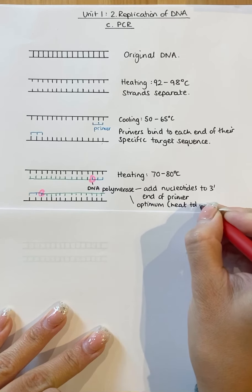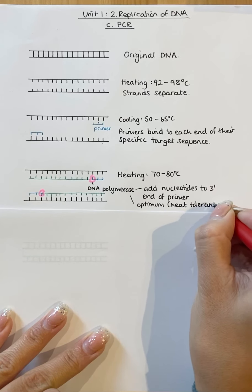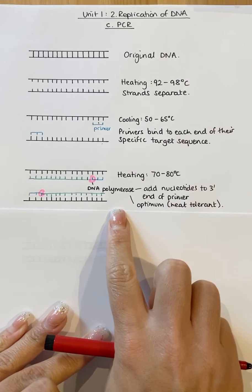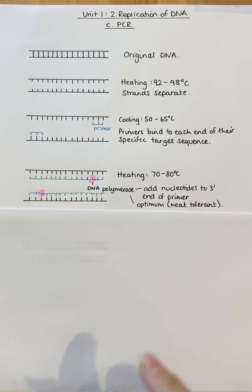And this temperature is the optimum for DNA polymerase because it is heat tolerant. Normally, human enzymes are around about 37 degrees for their optimum temperature. For this one, because DNA polymerase is heat tolerant, that temperature needs to be higher.